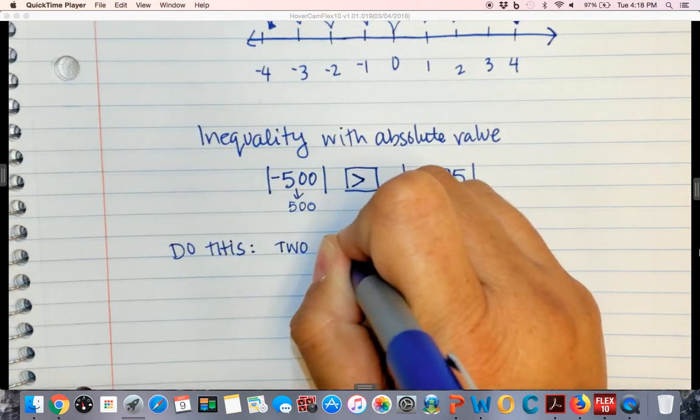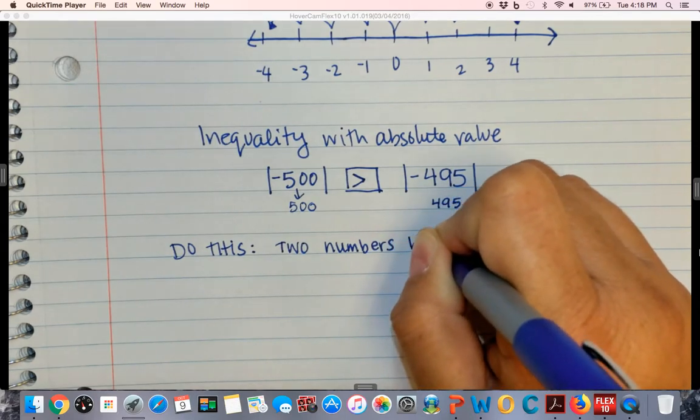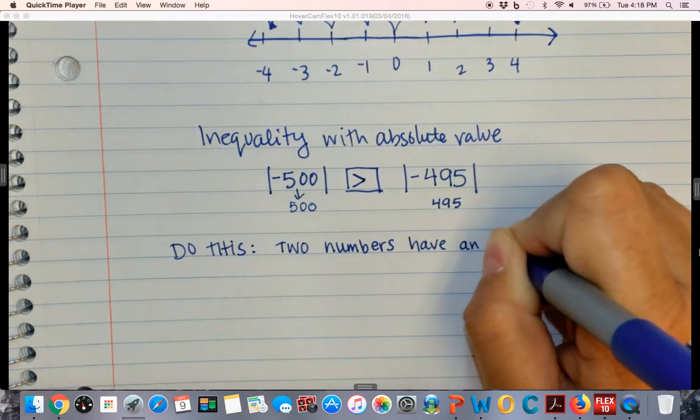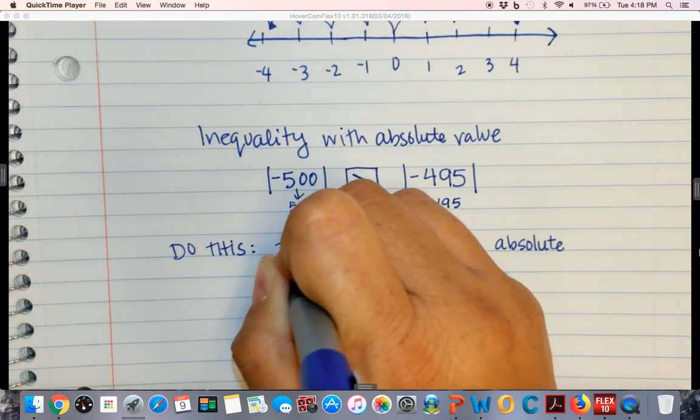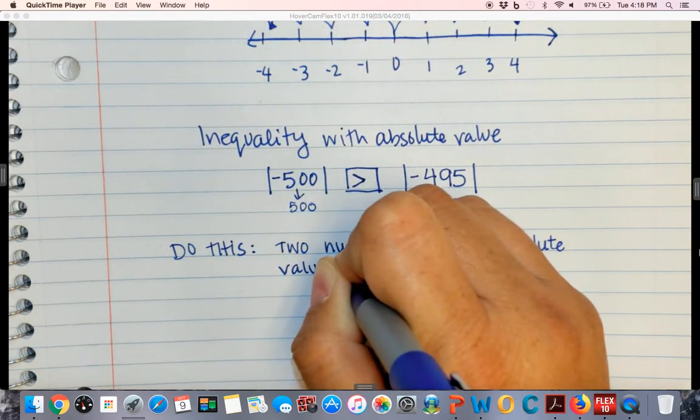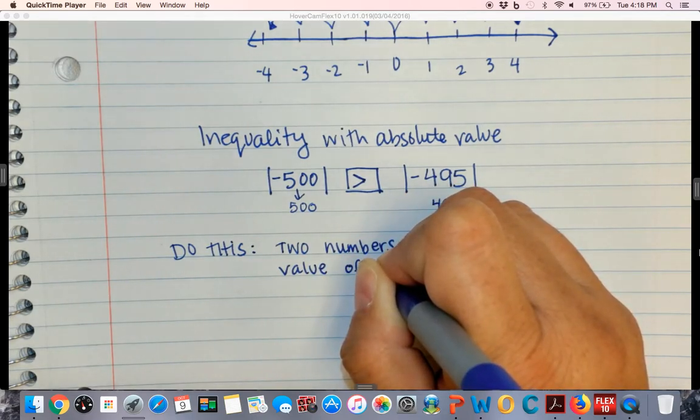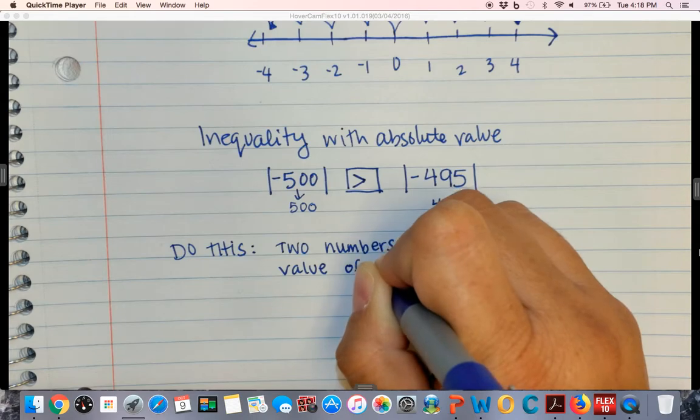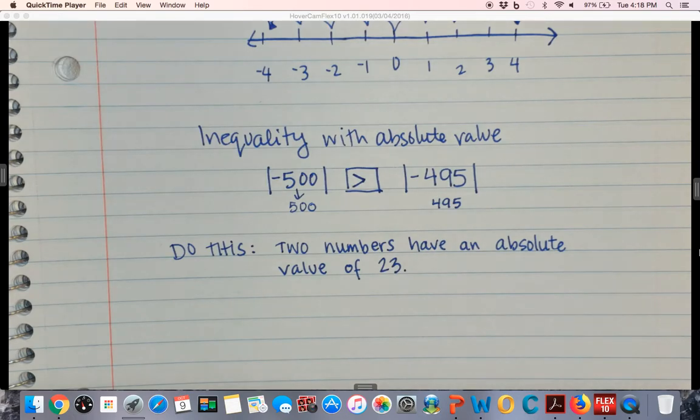Two numbers have an absolute value of 23. Two numbers have an absolute value of 23. Their absolute is 23.